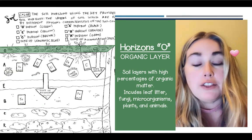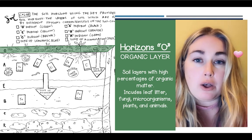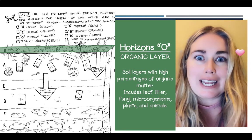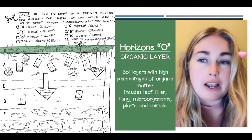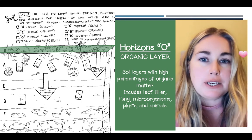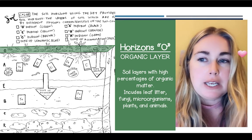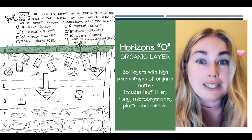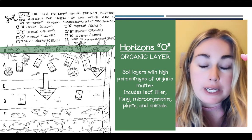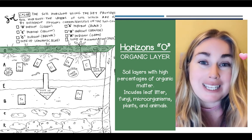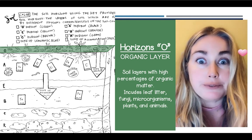The first horizon is Horizon O, or the organic layer. This layer has a high percentage of organic material. It includes leaf litter, fungi, microorganisms, plants, and decaying animals.